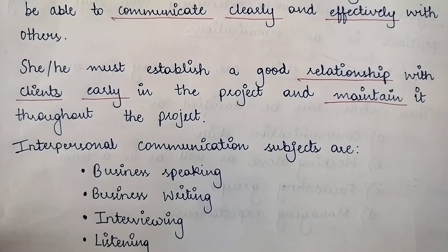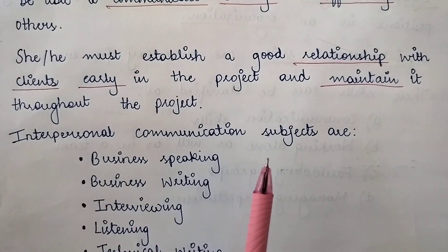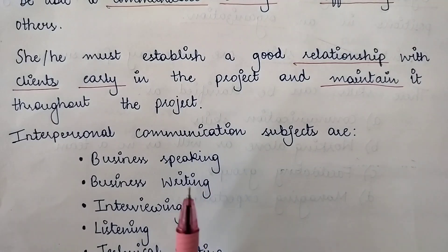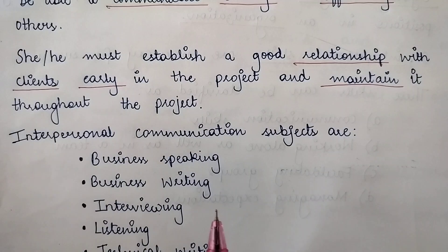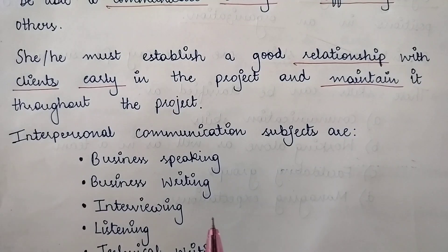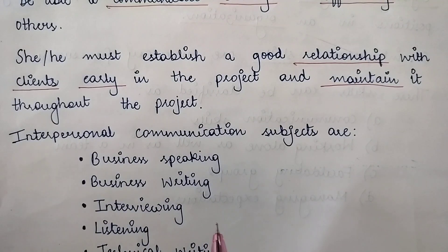The interpersonal communication subjects include business speaking — knowing the formal way of communicating with people in an organization. Then comes business writing, which refers to the format of communication style used in professional settings. The system analyst must know how reports, emails, memos, and proposals are written formally. Business writing aims to convey information clearly and concisely, following a specific format, using a professional tone, and focusing on achieving specific business objectives.